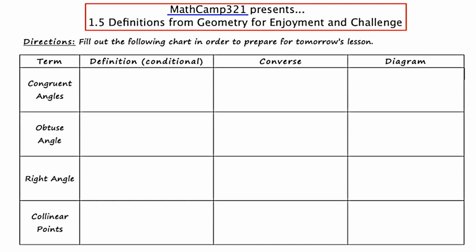The first term we're going to look at is congruent angles, and I'm going to give you the definition in what's called conditional form. Conditional form is when you describe a definition in if-then form. We can generalize this by saying: if P, then Q.